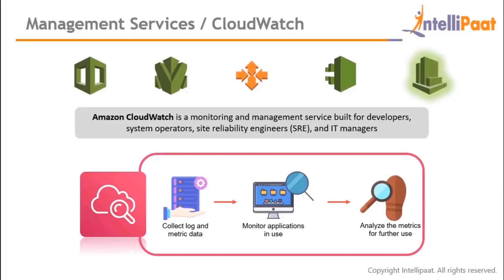Amazon CloudWatch is a monitoring and management service for developers, system operators, site reliability engineers, and IT managers. It monitors AWS resources and applications running on the AWS infrastructure. You can collect metric and log data from your AWS resources and uploaded applications, monitor application health and performance, and use that data for business value. CloudWatch is accessible via APIs, CLI, and the AWS Management Console.